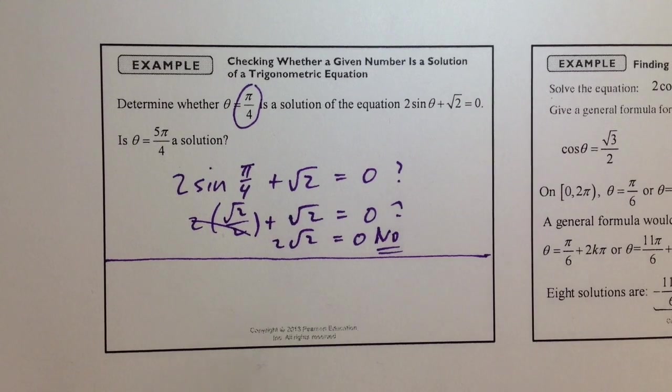It's the same idea as we've talked about all along. If a value, a real number, is a solution, then it will make the equation true. So you can see that this particular one does not.